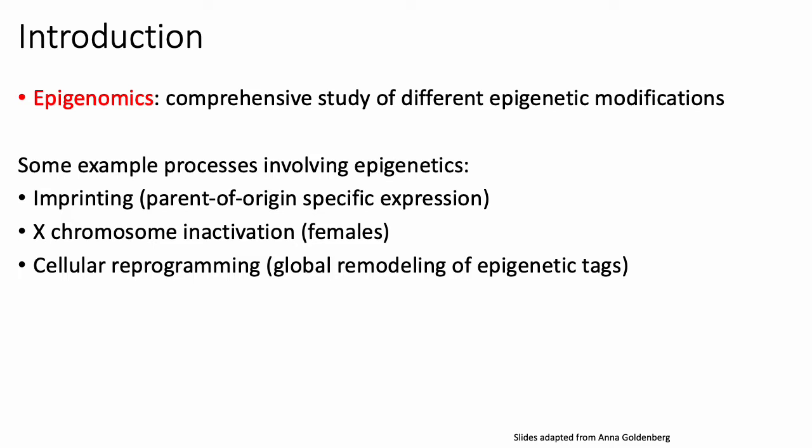Other processes include X chromosome inactivation, which only happens in females, and also cellular reprogramming, which involves, for example, reprogramming fibroblasts to neurons.